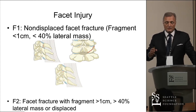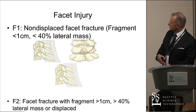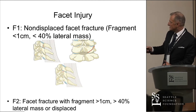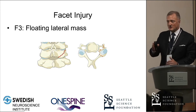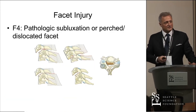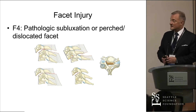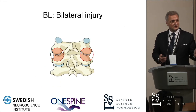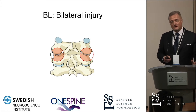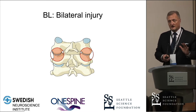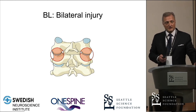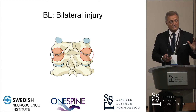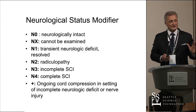We're hopeful that this will be a little bit more logical. F1 injuries are very minimally displaced and involve less than half the facet joint. F2s are basically more involved. F3s are floating lateral mass, as described by Dr. Sasso and Dr. Bransford. And F4s are any form of dislocation, and if it happens on both sides, we put a suffix of BL on there. We've tested these globally, and this is by far the leading system in terms of inter- and intra-observer reliability — about 75 to 80 percent concurrence.